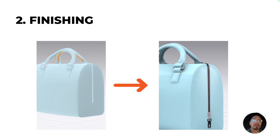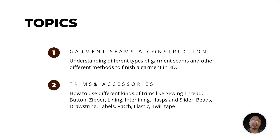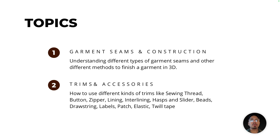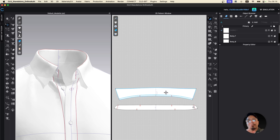Once you understand those two concepts, the next important stage is the finishing process. Finishing involves understanding the seams, the construction of the garment, and the trims and accessories. It is both a visual process and a technical process.